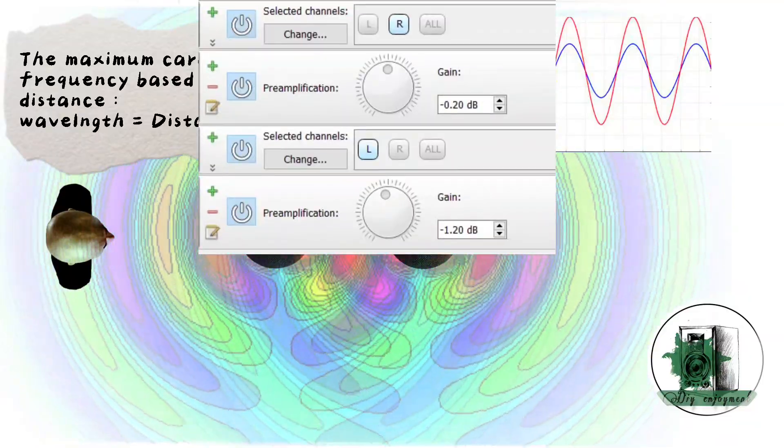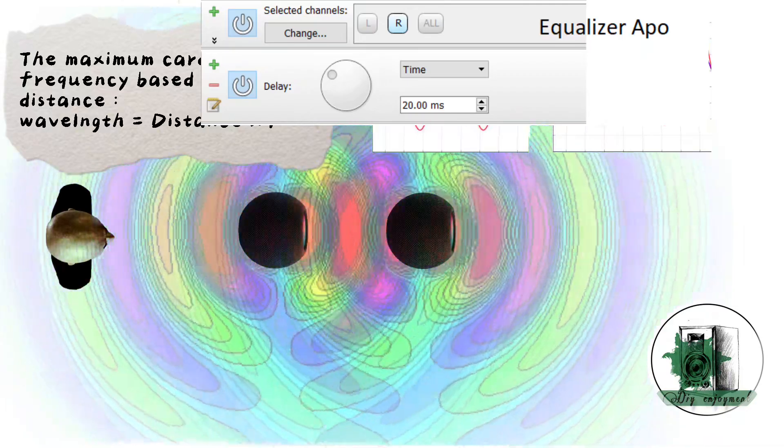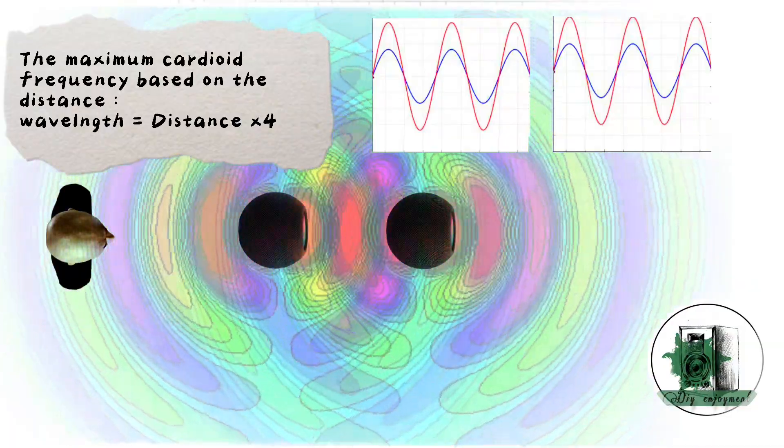Use Equalizer APO to apply a delay to one driver, ensuring both sources have the same volume. Then, experiment with different volumes and delays. You'll notice how easily the sound position changes.